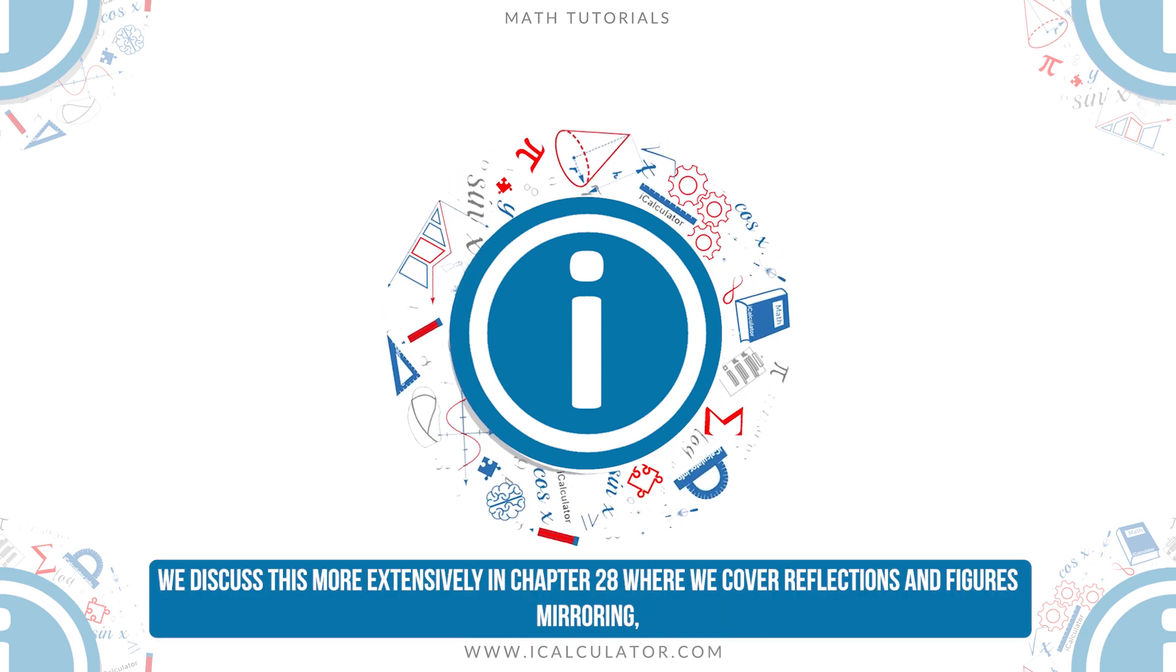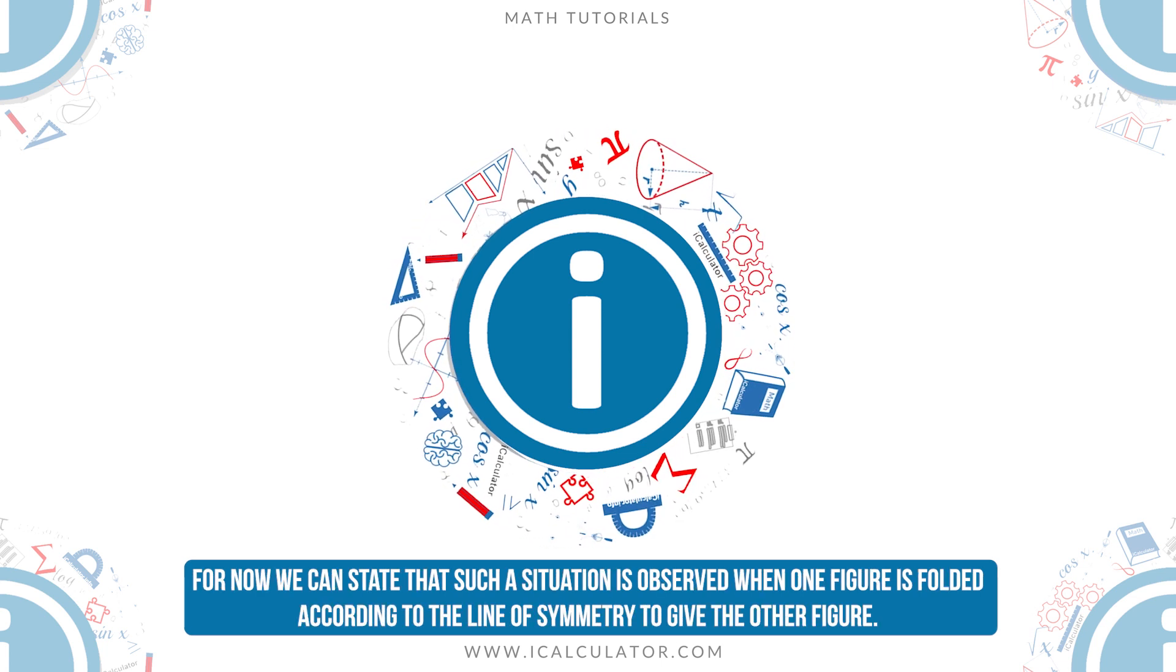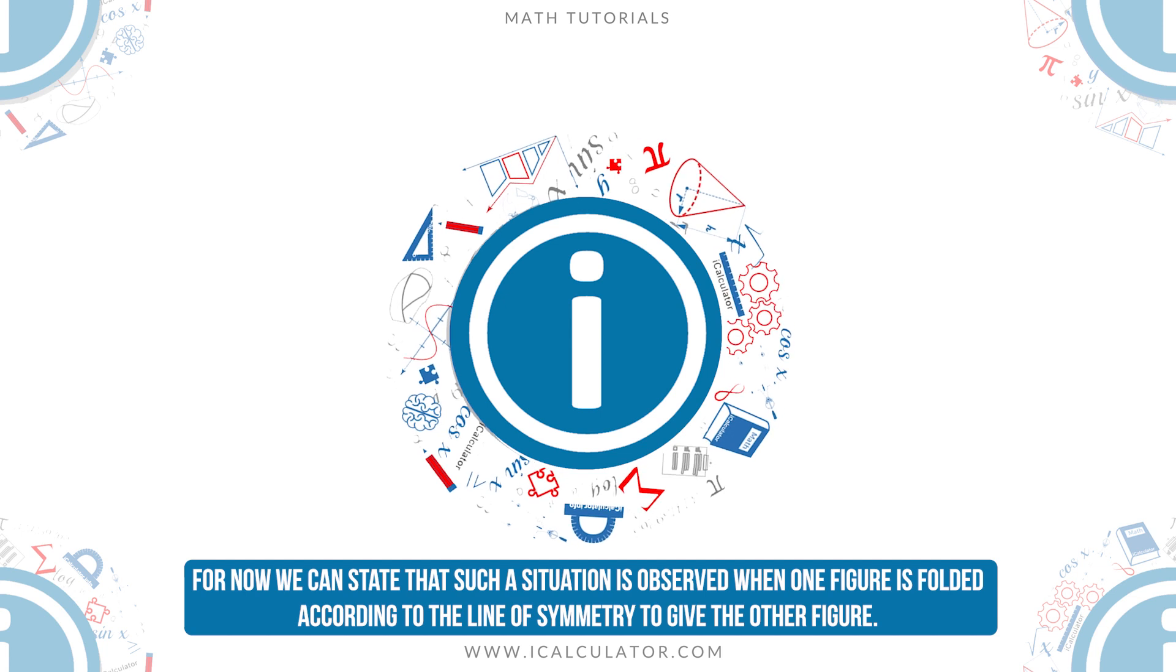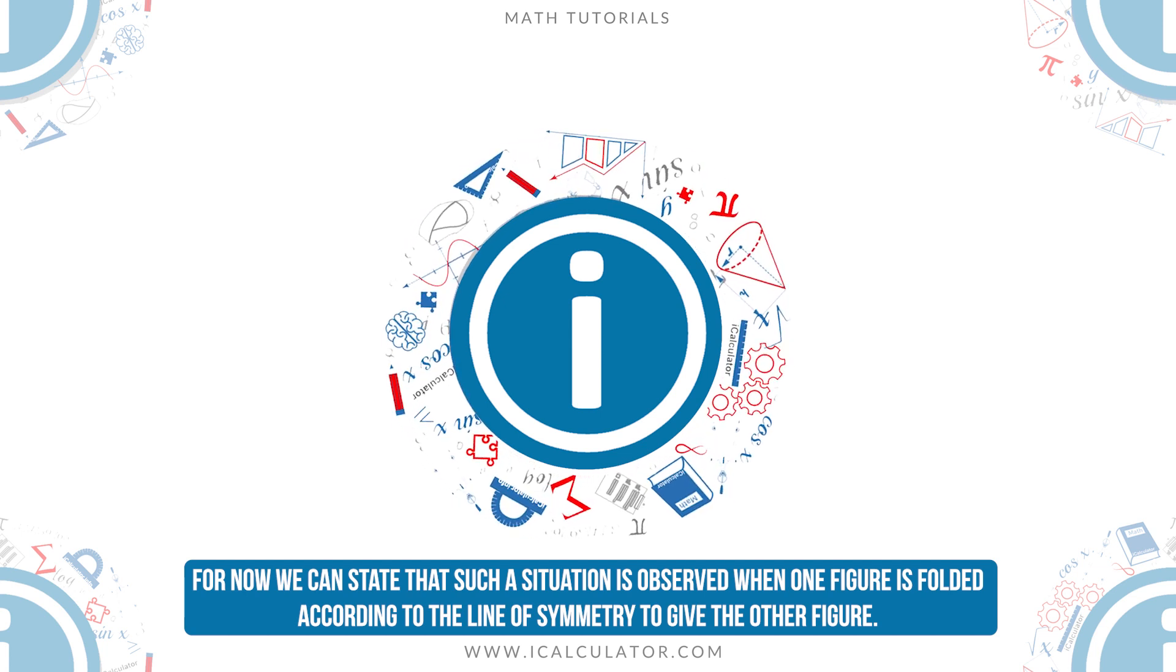We discuss this more extensively in chapter 28 where we cover reflections and figures mirroring. For now we can state that such a situation is observed when one figure is folded according to the line of symmetry to give the other figure.